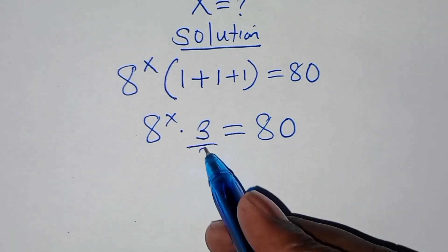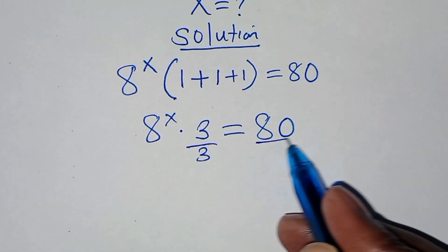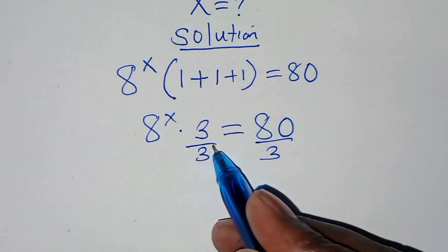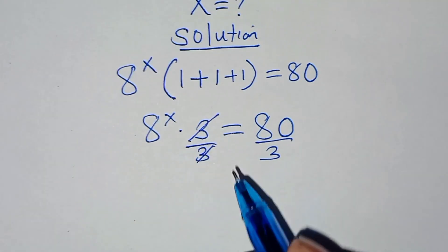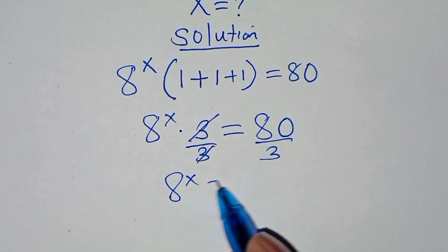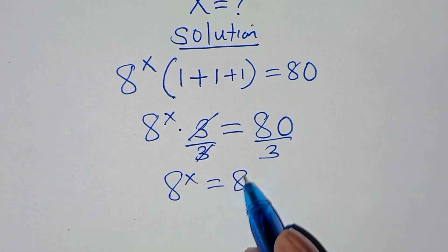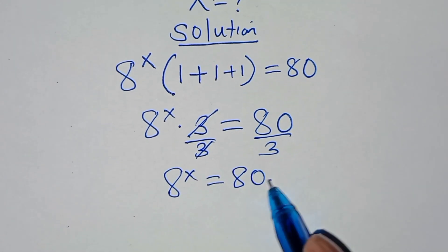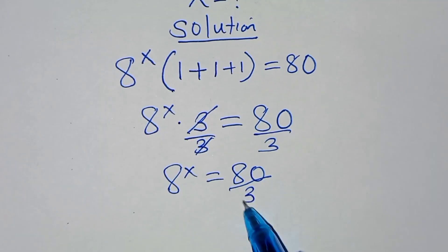So let's divide both sides by 3, so that now here we'll have 8 to the power x, this is equal to 80 over 3.